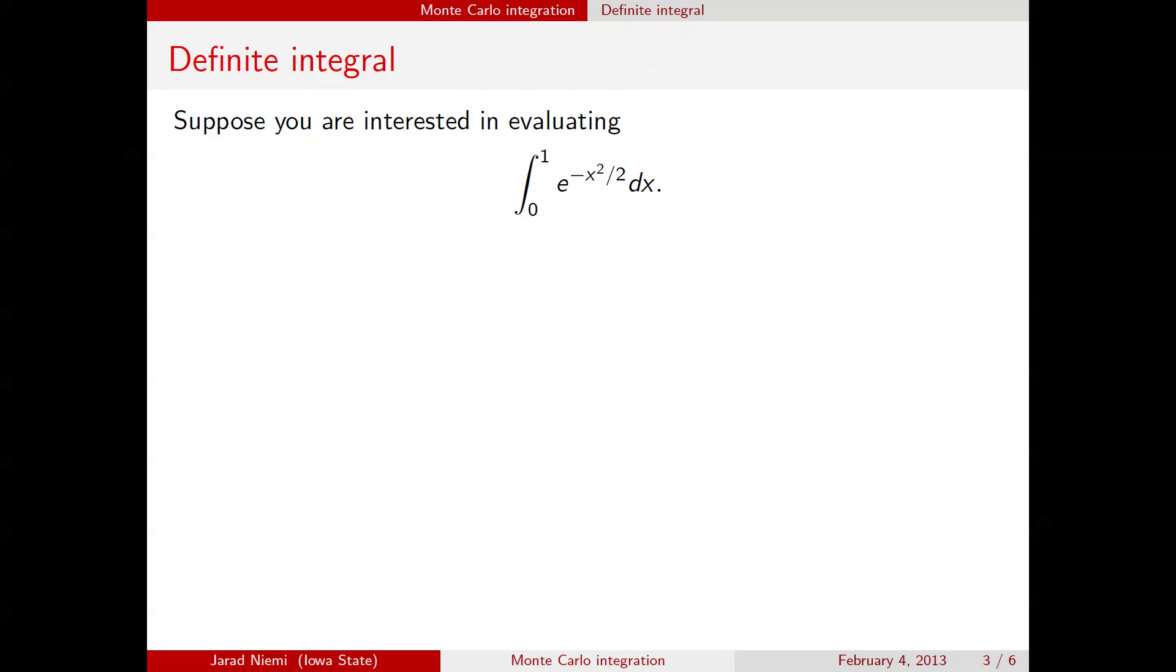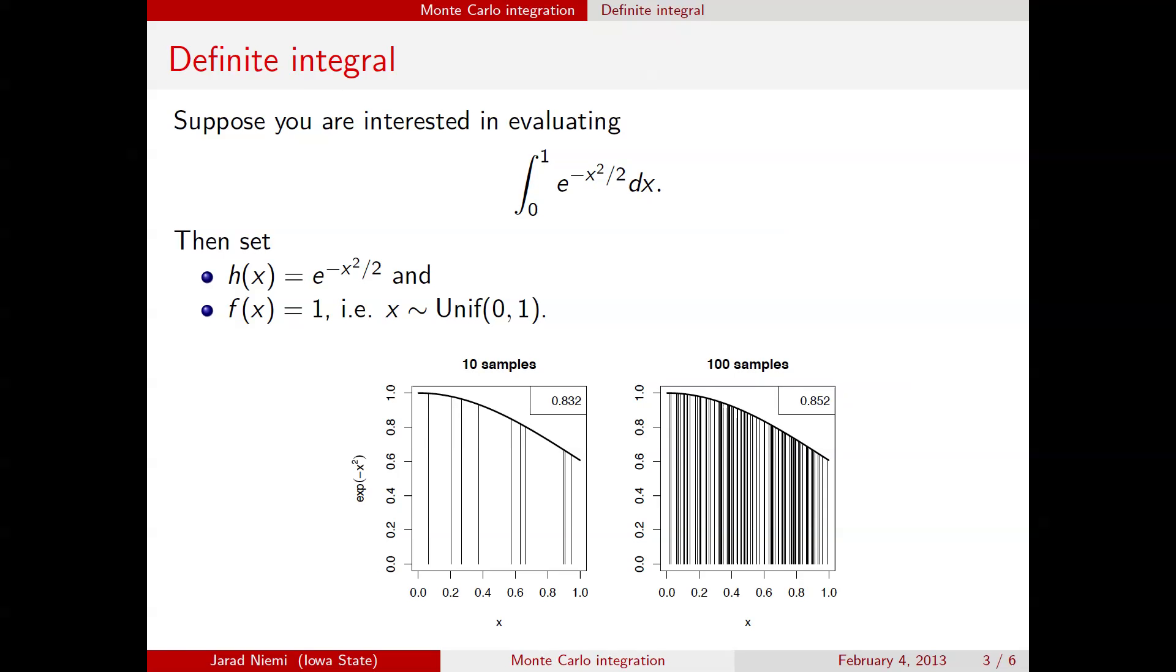And so we could split this problem up into a couple of ways, but the way that we're going to do it here is we're going to set the function that's in the integrand there. That is going to be our h. So h here is this whole function e to the negative x squared over 2. And then we're going to set, there's nothing left in the integrand, so f must be 1. But this implies that x has a uniform distribution on the interval 0, 1. So this technique here is going to be a technique that you could use to solve any definite integral problem, where the bounds of the integral determine the bounds on your uniform sample. And then h just ends up being whatever function you have in the integrand.